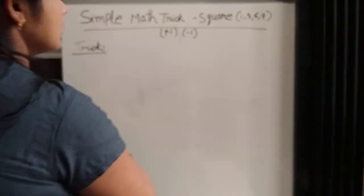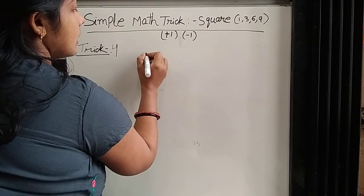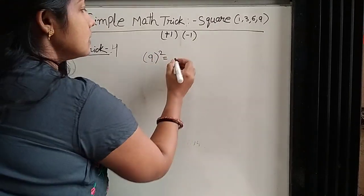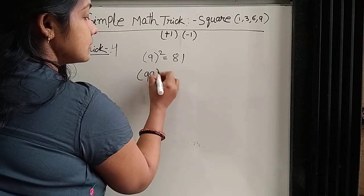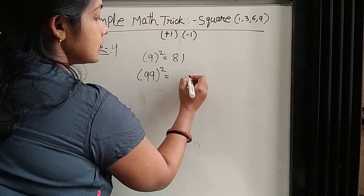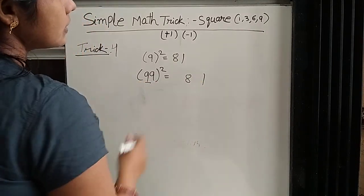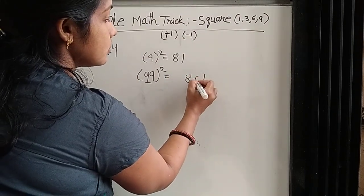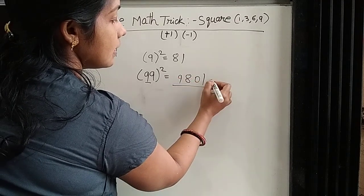Now take number 4 — plus 9. 9 square — everyone knows 81. Suppose there is 2 9: 9 square is 81, and the rest is 1 9. So 1 9 minus 1: 1 minus 1 is 0, 8 plus 1 is 9. This is the answer.